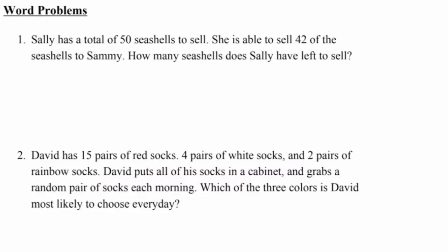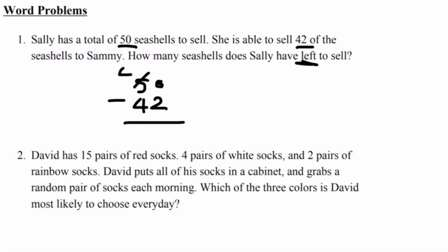The next topic is word problems, and it's asking us to solve the problems below. Number 1: Sally has a total of 50 seashells to sell. She's able to sell 42 of the seashells to Sammy. How many seashells does Sally have left to sell? She had a total of 50 but sold 42. We know this is a subtraction problem because she gave away 42, and the keyword is 'how many left.' 50 minus 42: we borrow from the tens place — 5 becomes 4, 0 becomes 10 — 10 minus 2 equals 8, 4 minus 4 equals 0. Sally has 8 shells left.